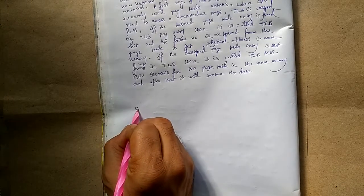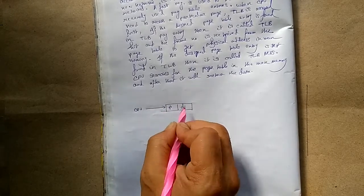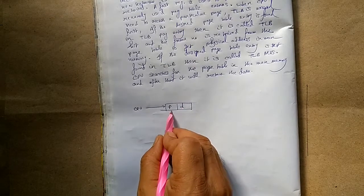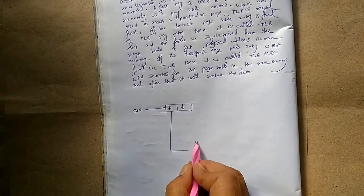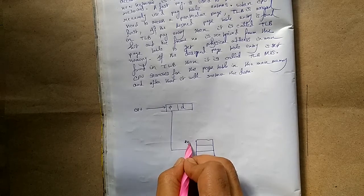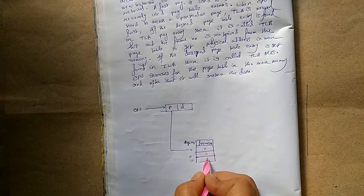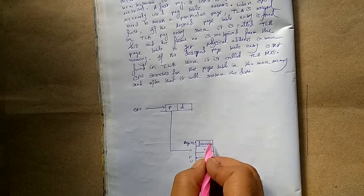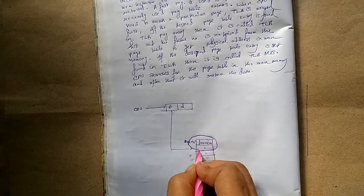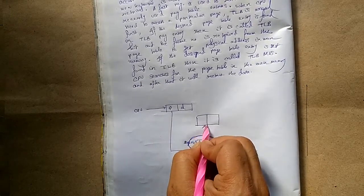Now we will see the diagrammatic representation of TLB. The CPU generates a logical address, one part called page number and another called page offset. In normal paging, the page table uses the page number as an index to hold the corresponding frame number, but in TLB this portion of the page table is kept in a high-speed register called TLB.